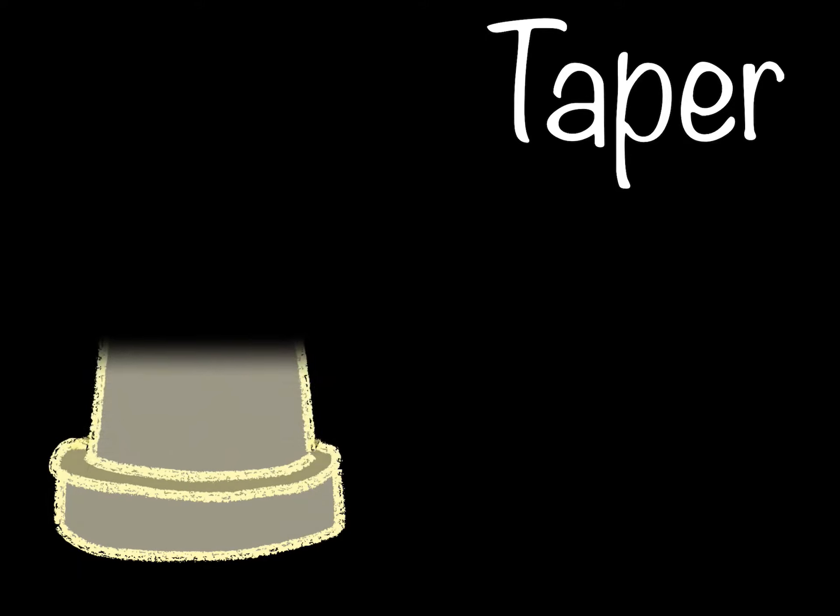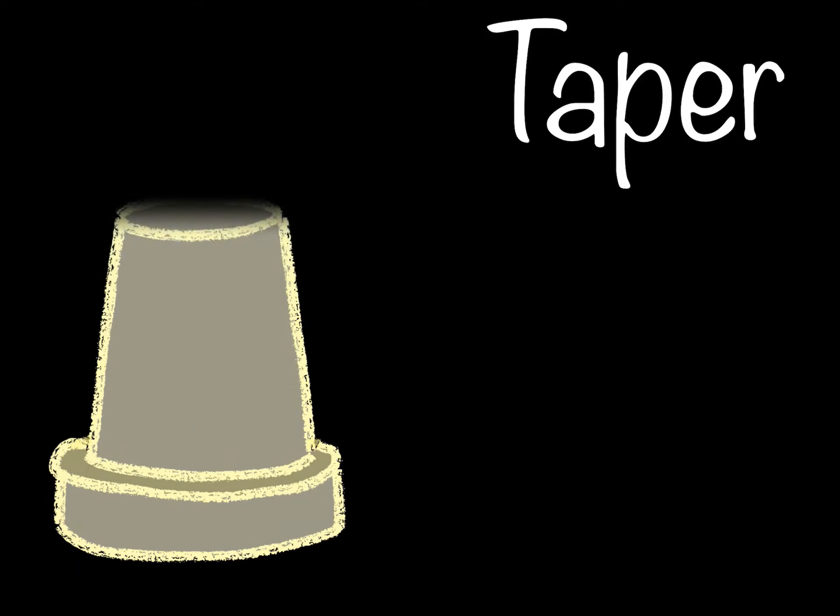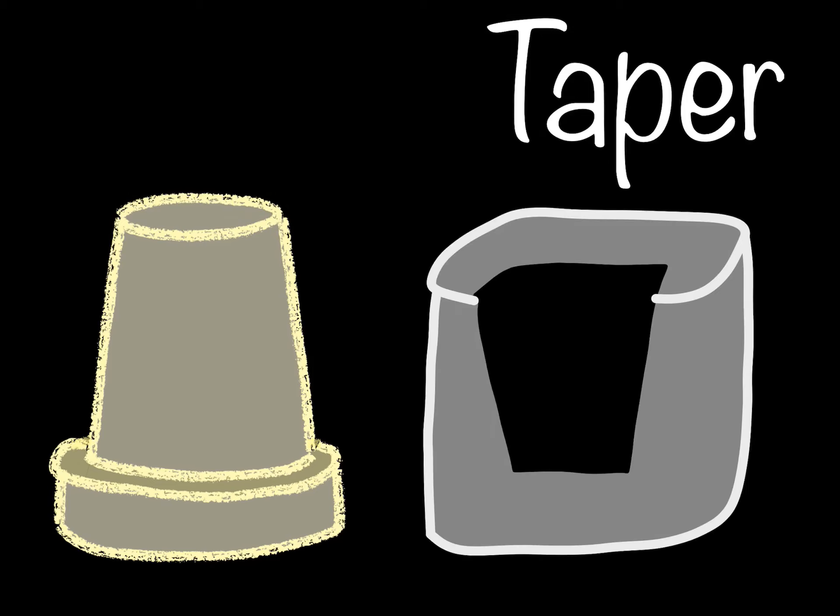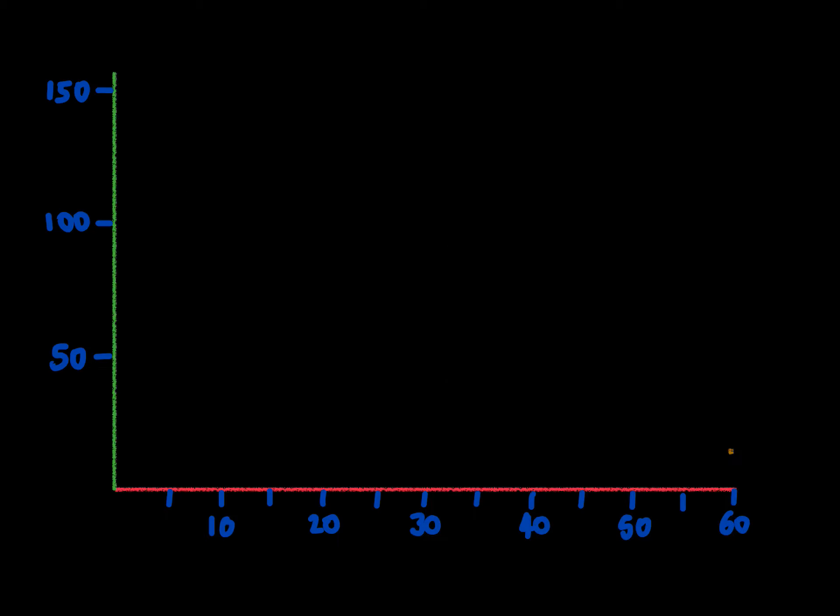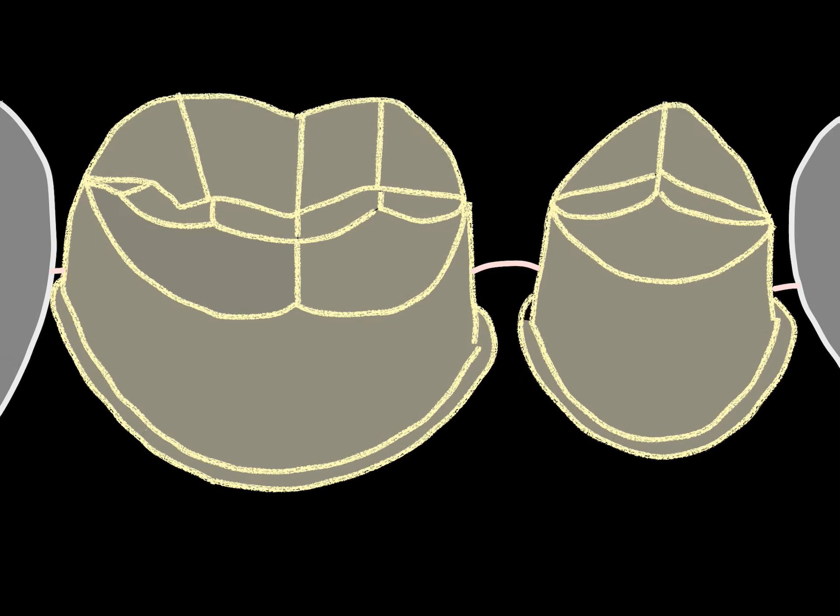The axial walls of preparation must have slight taper to permit the restoration to seat. To be simple, in the occlusal direction, two opposing external walls must gradually converge, or two opposing internal walls must diverge. We can retrieve from this graph: as taper decreases, retention increases. Minimal taper along with greater surface area of teeth provides good retention.